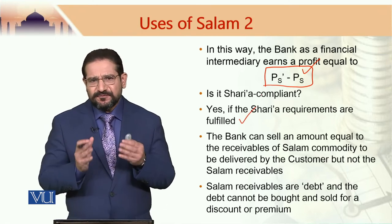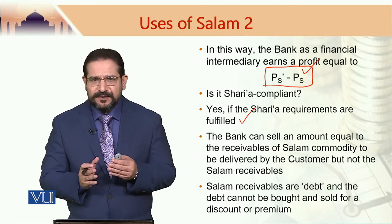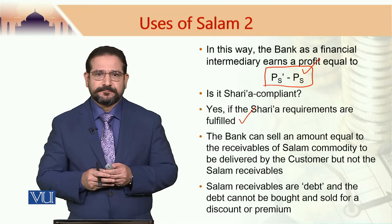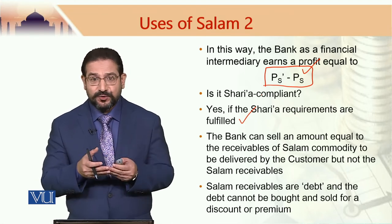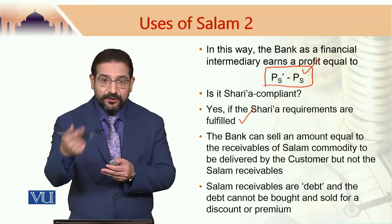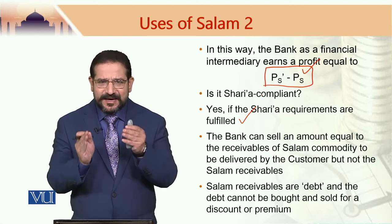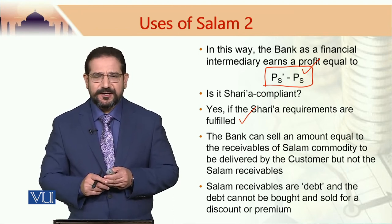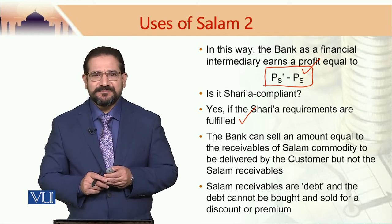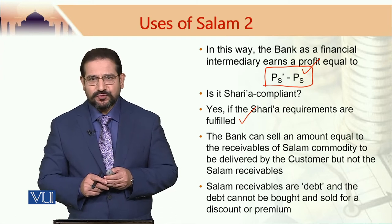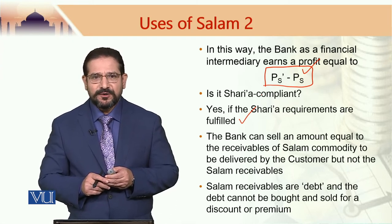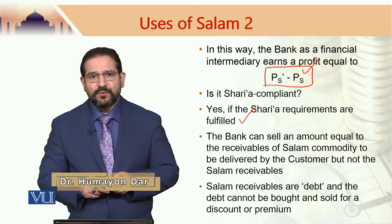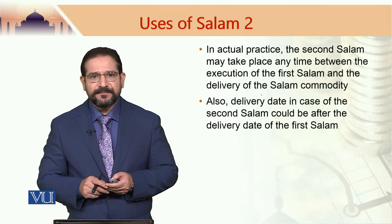Because this involves two salam contracts, it is important that the bank is not selling the receivable from salam sale 1. Pursuant to salam sale 1, farmers would be delivering the commodity on a future date to the bank. The bank cannot specifically sell that commodity — i.e., the receivable — because in Sharia, in Islamic law, receivables are deemed as debt, and debt cannot be bought and sold either at a discount or for a premium. This is a very important consideration which must be taken into account when structuring a deal based on salam and parallel salam.